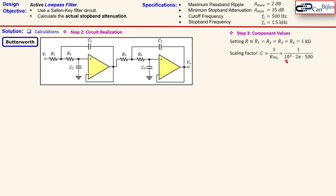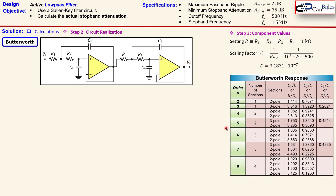With R = 1000 Ω and the cutoff frequency of 500 Hz, the scaling factor C equals approximately 3.1831 × 10⁻⁷. This is an important value because we now use the Butterworth response table for fourth order. For the first two-pole stage we use two parameters, and for the second two-pole stage we use another two parameters from the table.